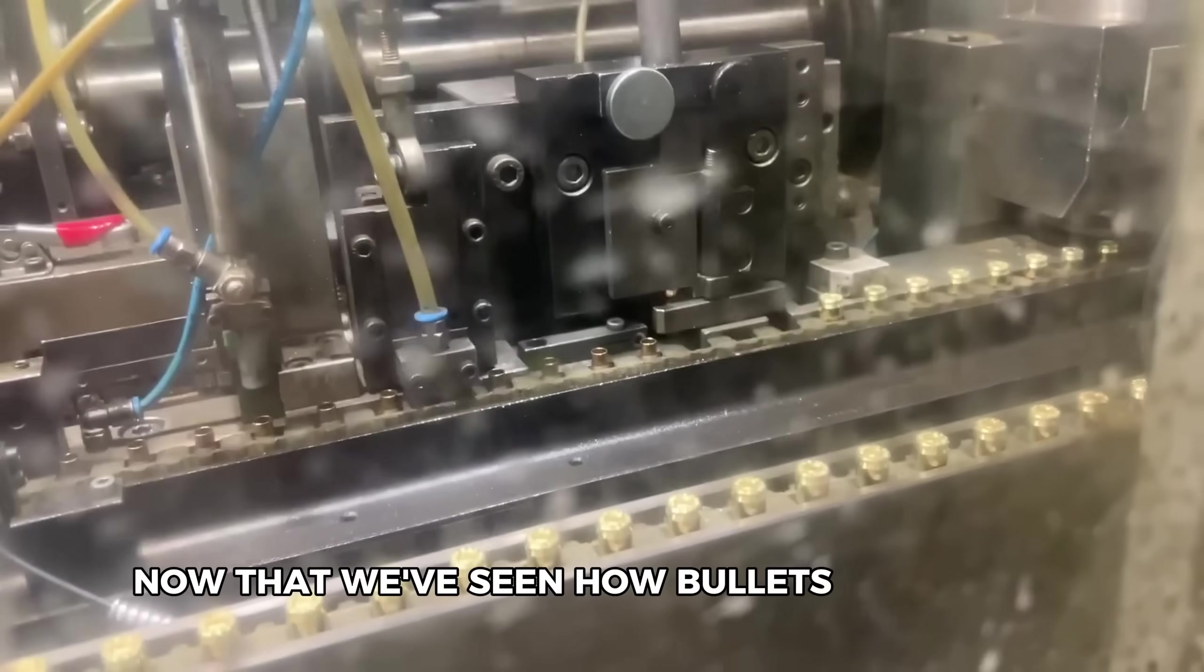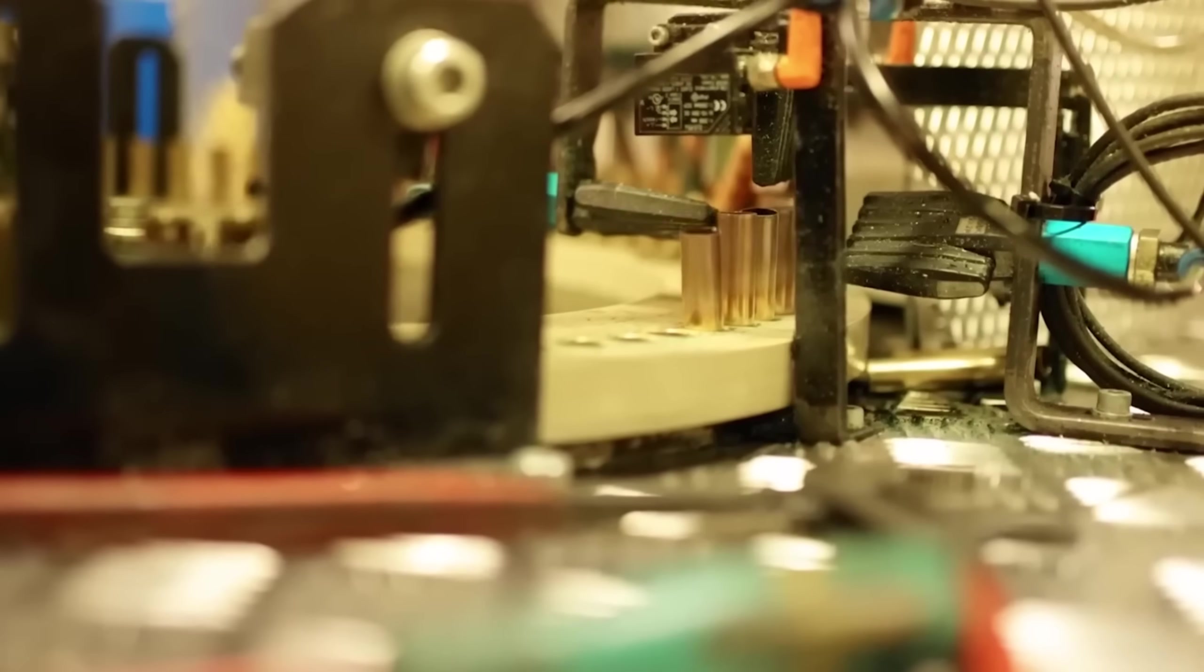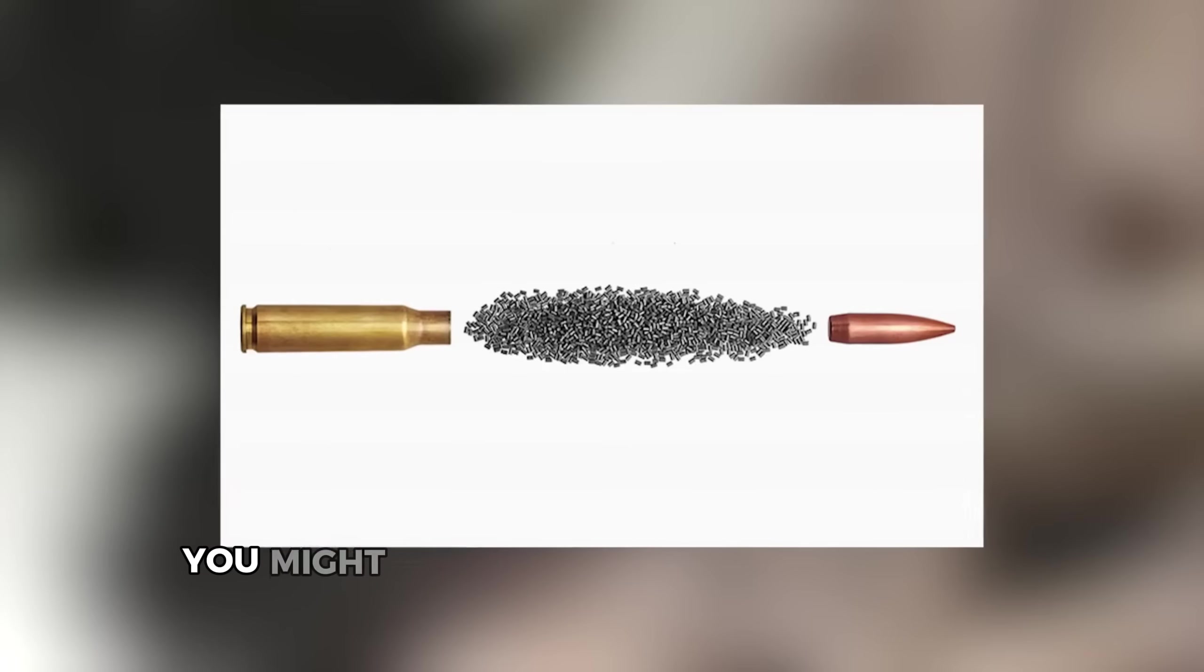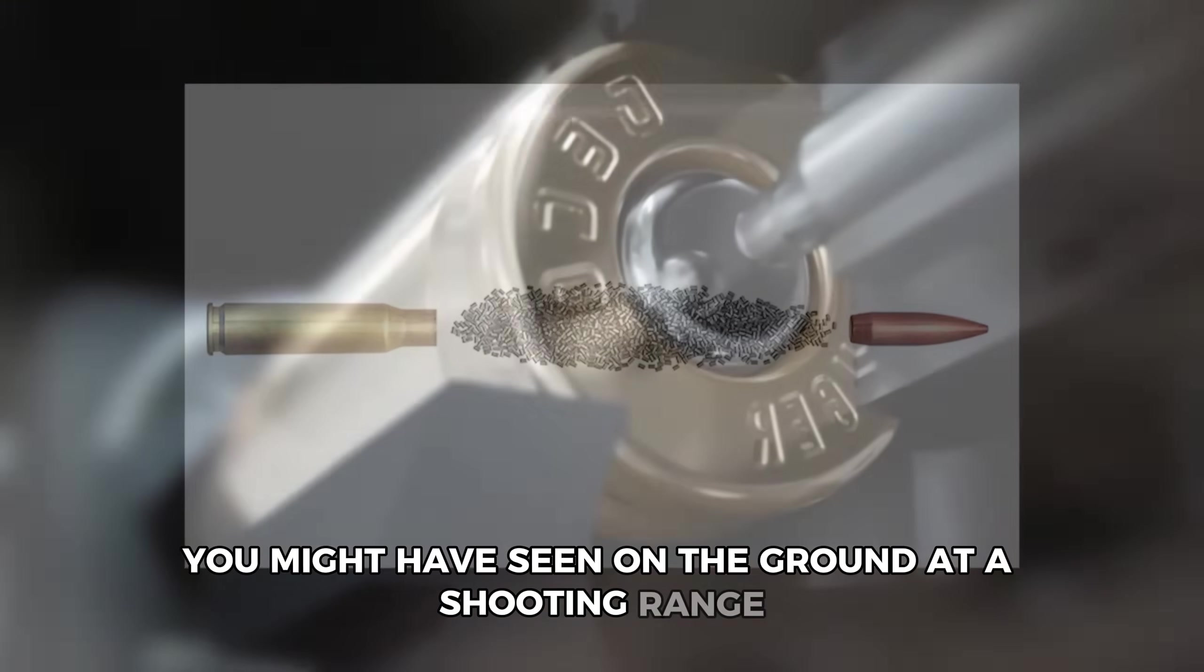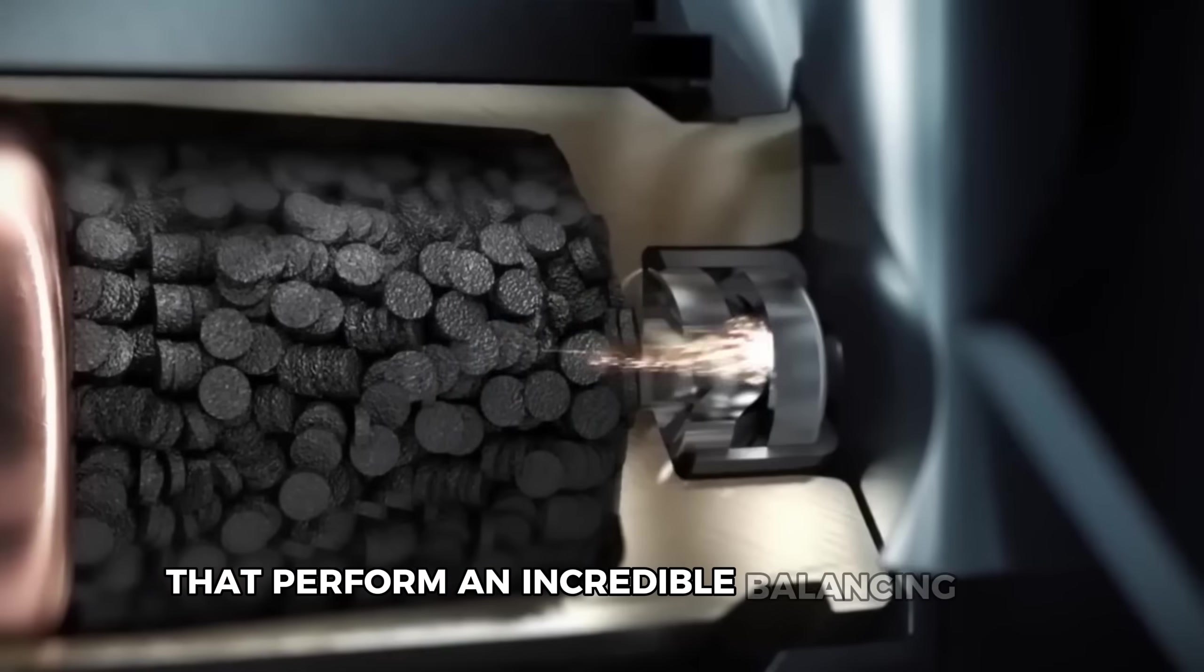Now that we've seen how bullets take shape, let's move to another fascinating part of the factory. Those small brass cylinders you might have seen on the ground at a shooting range, they're actually engineering marvels that perform an incredible balancing act.